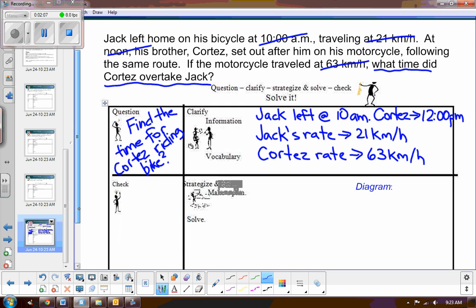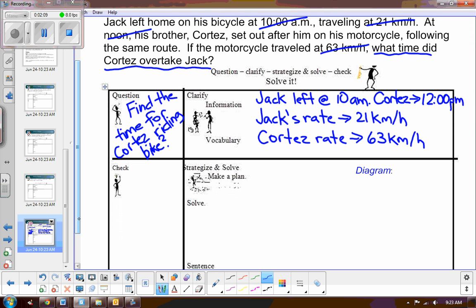So next, we need to really understand what's happening here, so we need to draw a diagram. So we know they're both leaving from the same spot. So let's say this first arrow here represents Jack. So Jack, we know that his rate is 21 kilometers per hour.